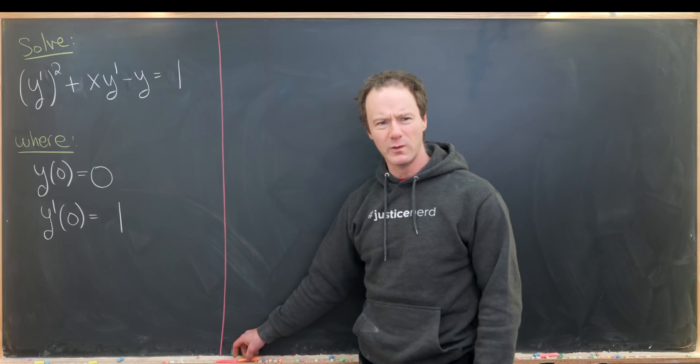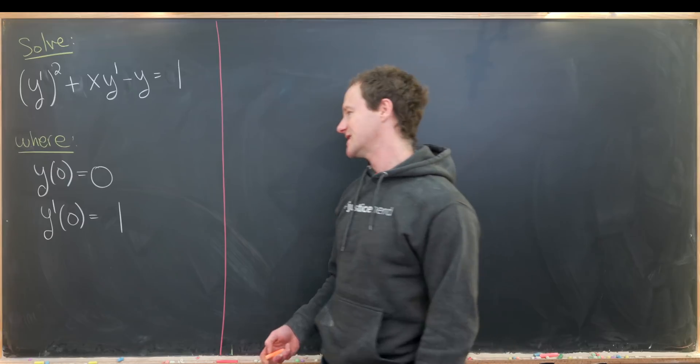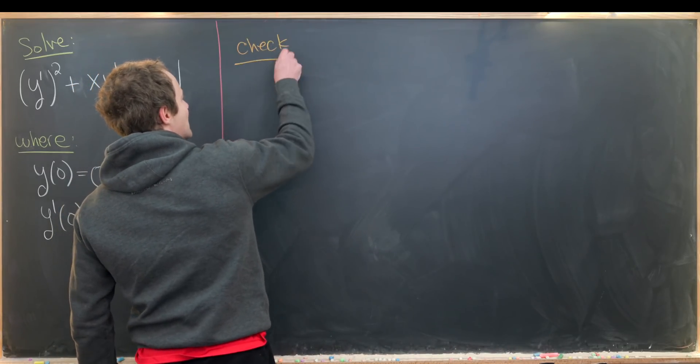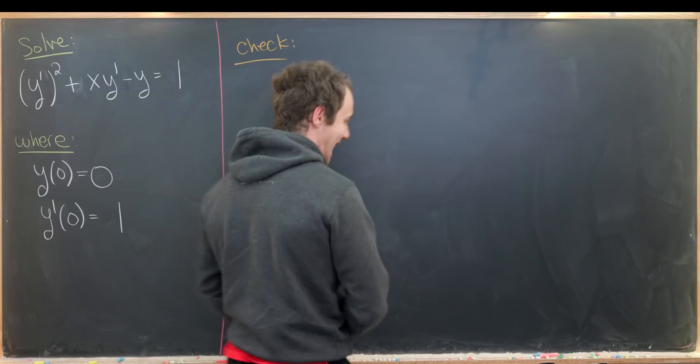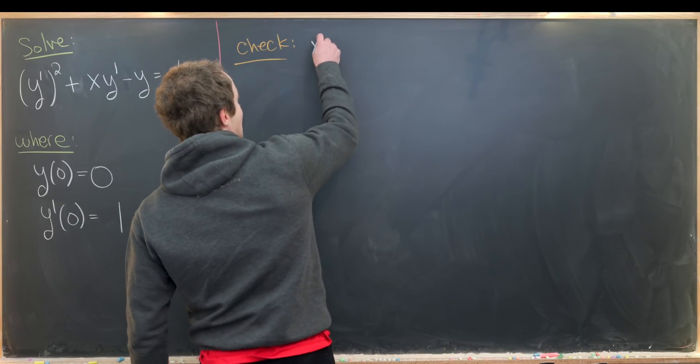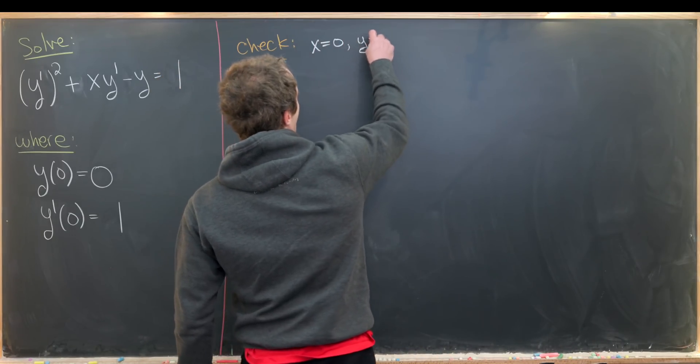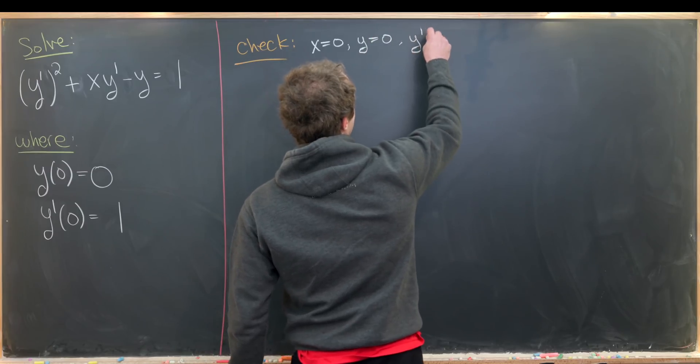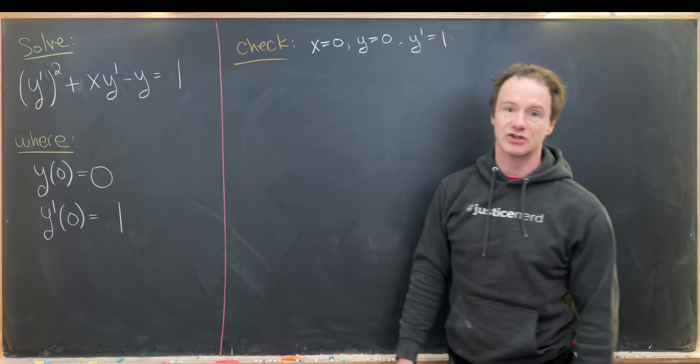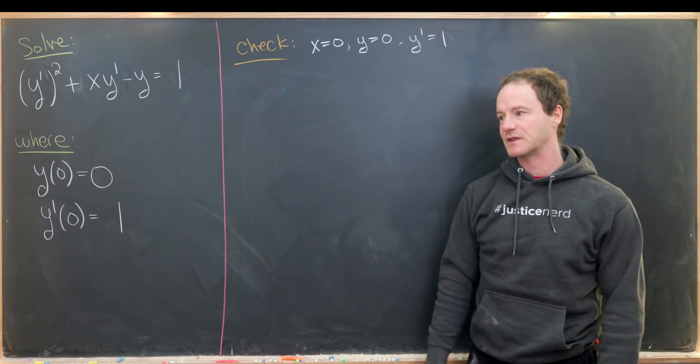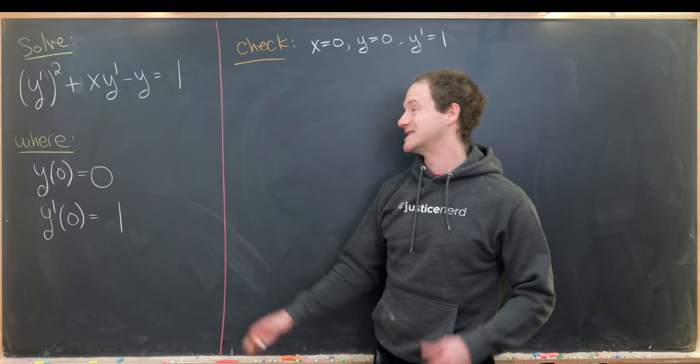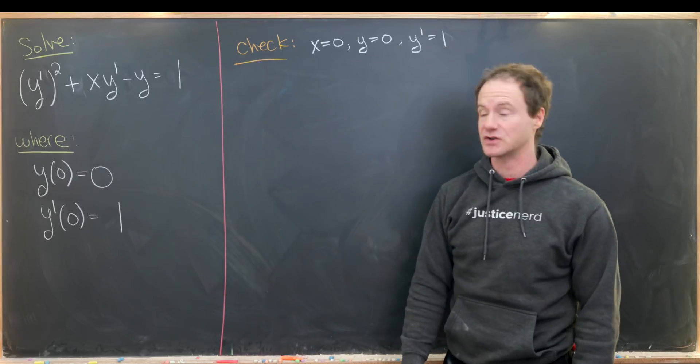Before we get started solving this, let's just check that it makes sense. What I really mean by that is we're going to check that it makes sense at the initial conditions. So that means we need to plug x = 0, y = 0, and y' = 1 into this differential equation and make sure we get something that's true. If we did not get something that's true, then this is not solvable with these initial conditions.